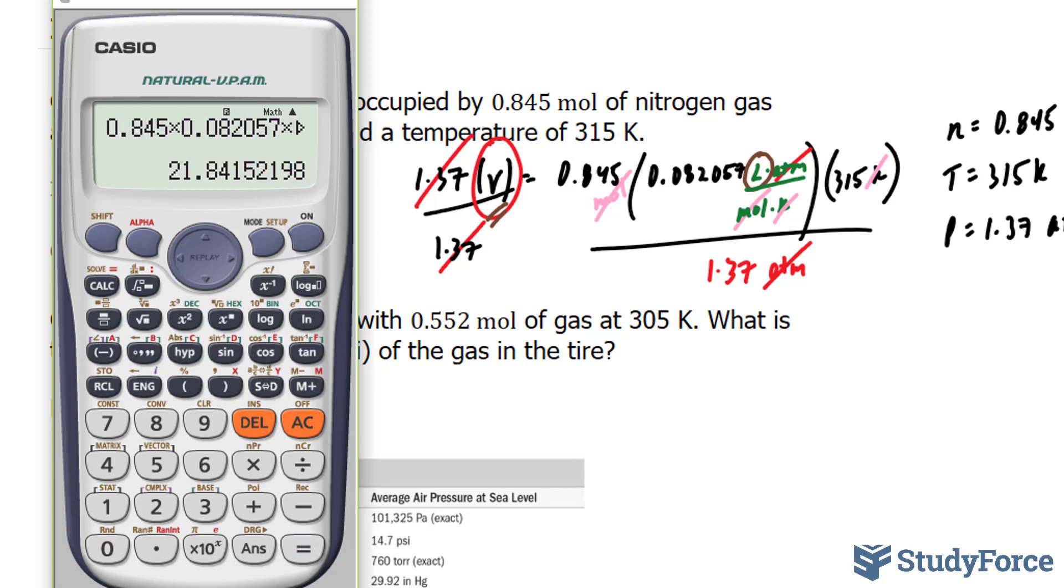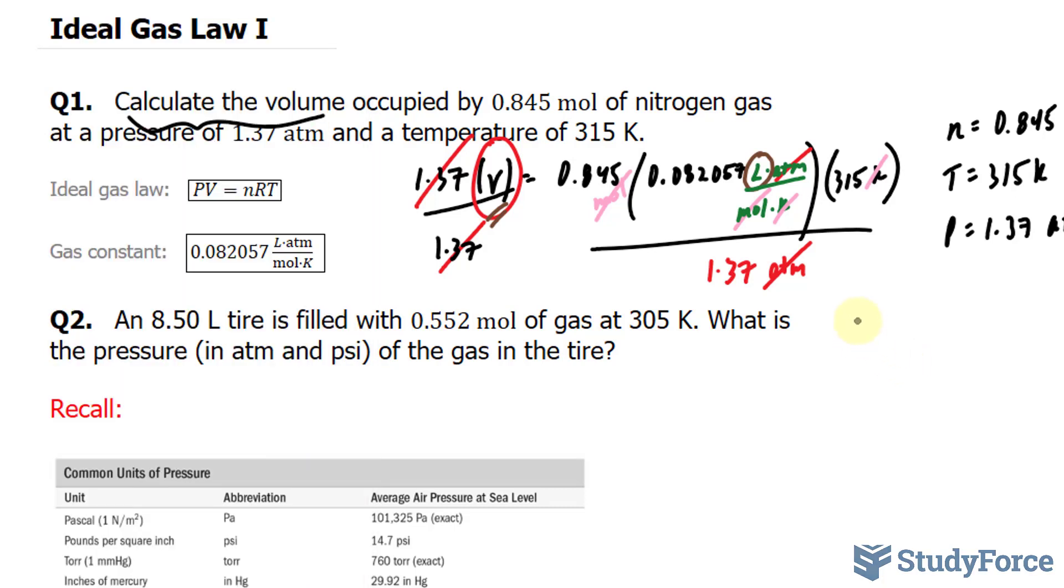That gives us 21.84 for the denominator. Dividing that by 1.37 gives us 15.9427. Volume is equal to 15.9427 liters.